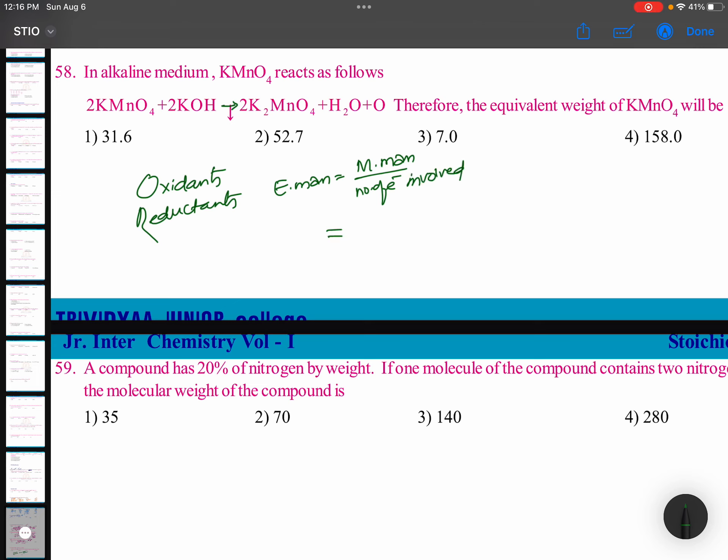So, KMnO4 molecular mass is 158. And here you see KMnO4 oxidation state of manganese is plus 7. K2MnO4 manganese oxidation state is plus 6. You know, potassium permanganate KMnO4: potassium plus 1, oxygen minus 2.